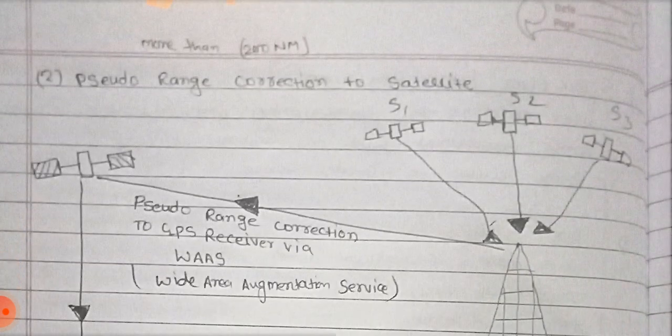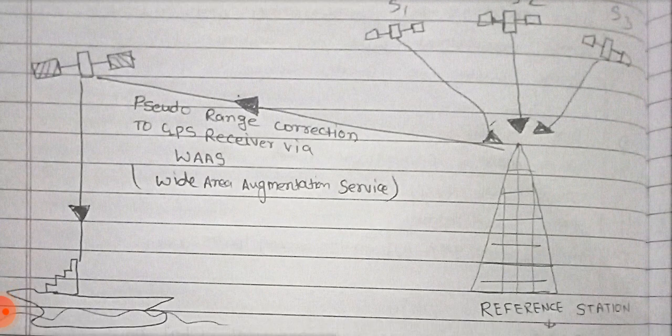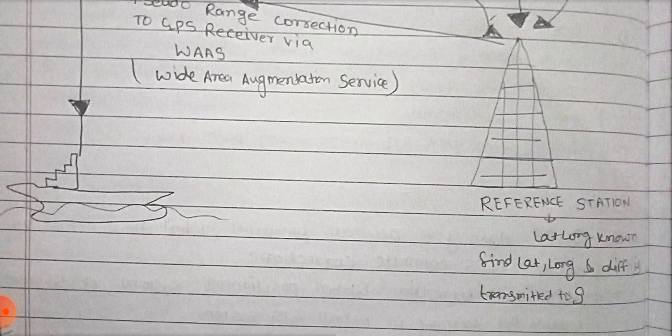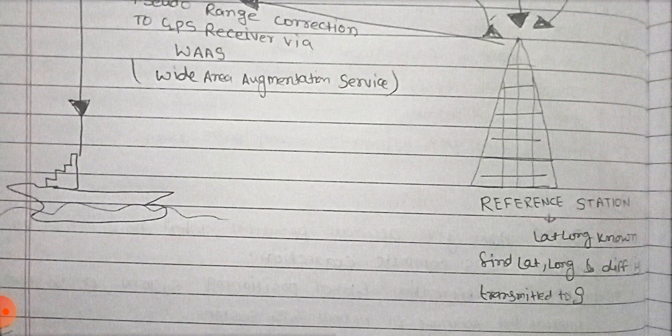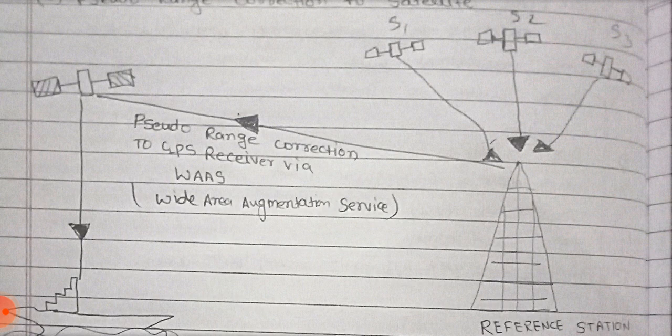The second method is pseudo range correction to satellite when the range is more than 200 nautical miles. This is our DGPS reference station, latitude longitude is known. The DGPS station calculates the error of each satellite and transmits this pseudo range correction to GPS receiver via Wide Area Augmentation Service.